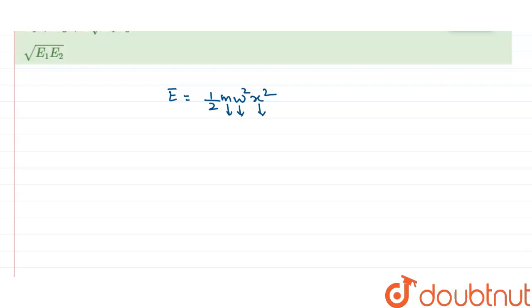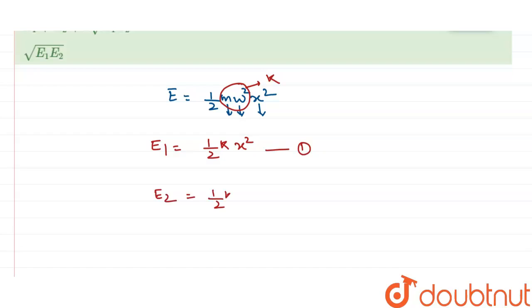In the question, at displacement x the energy is E1. So I can write E1 = ½mω²x². Since mass and angular velocity are the same, mω² is constant, which I'll call k. So E1 = ½kx² — this is equation 1, for displacement x. Similarly, for displacement y, the energy E2 = ½ky² — this is equation 2.